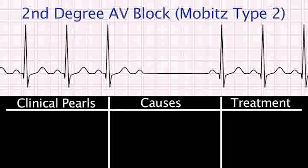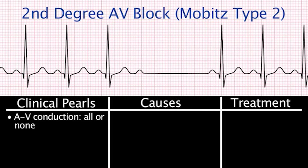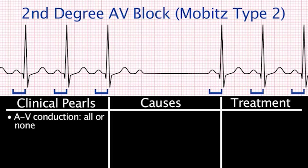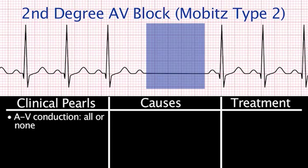Second-degree AV block, or Mobitz type 2: AV conduction is all or none. There is either normal AV conduction with normal PR intervals, or the conduction from the atria to the ventricles is completely blocked.